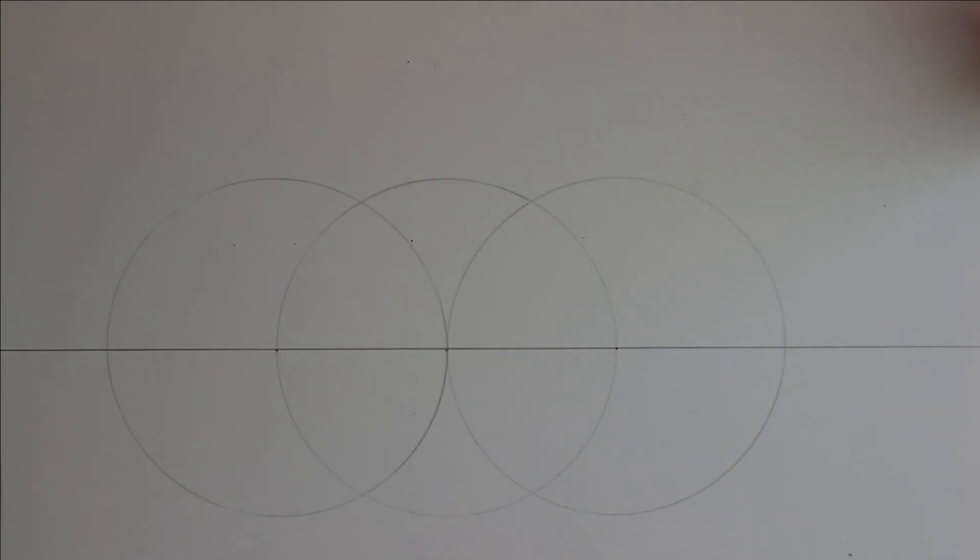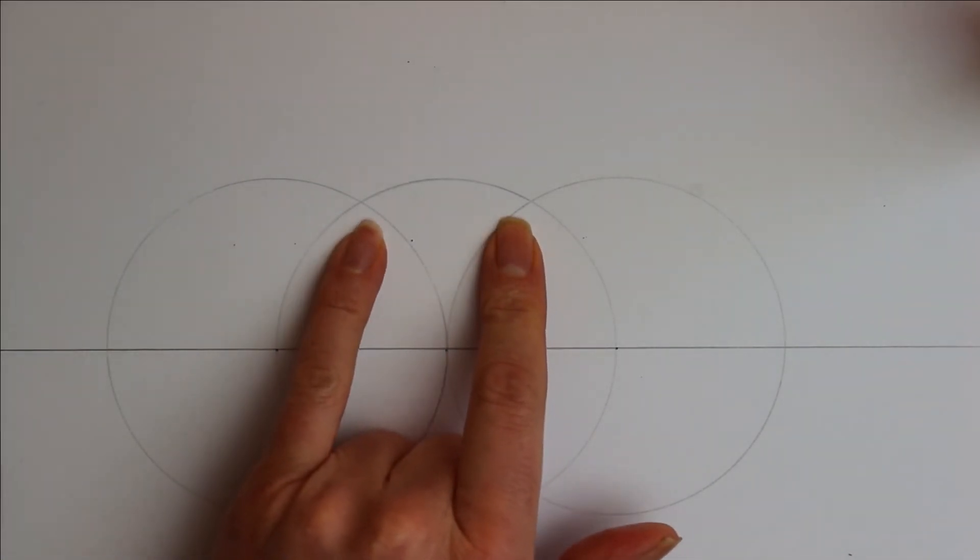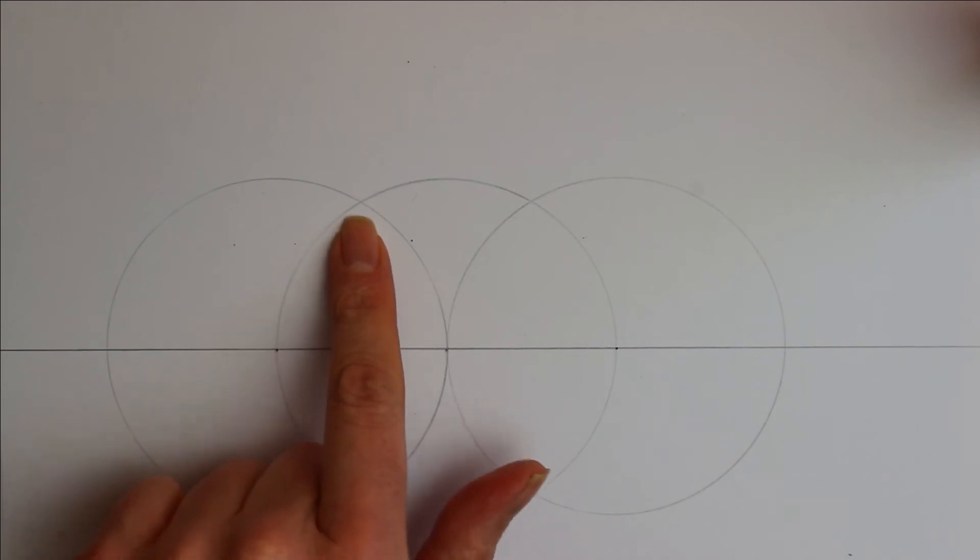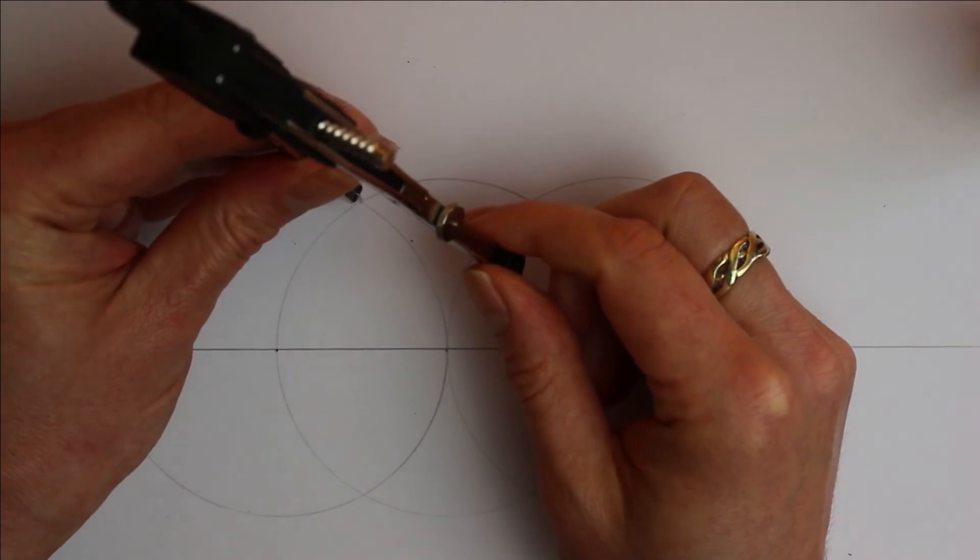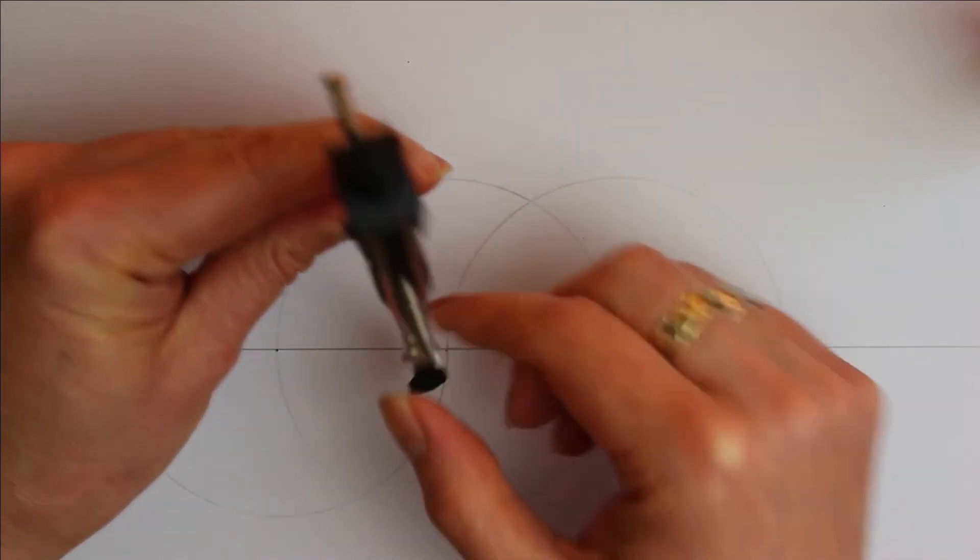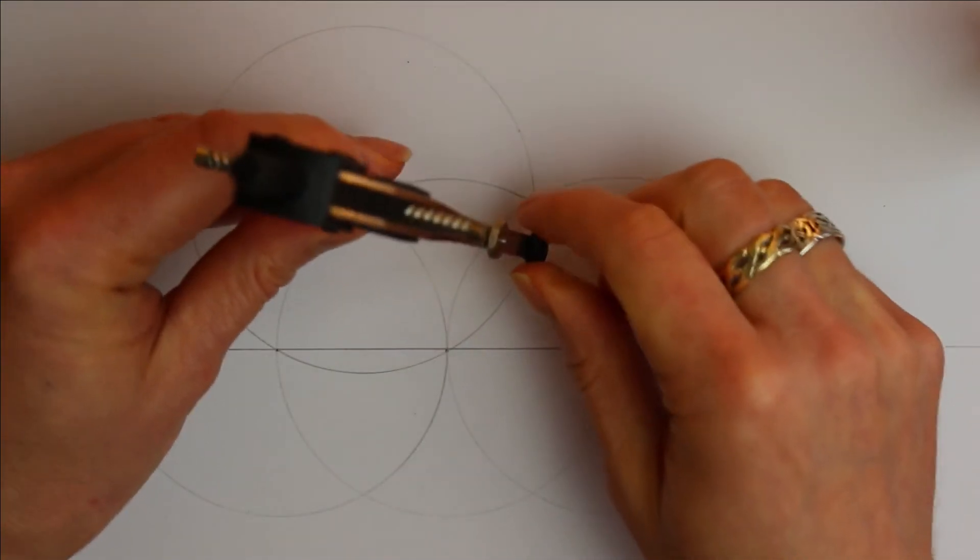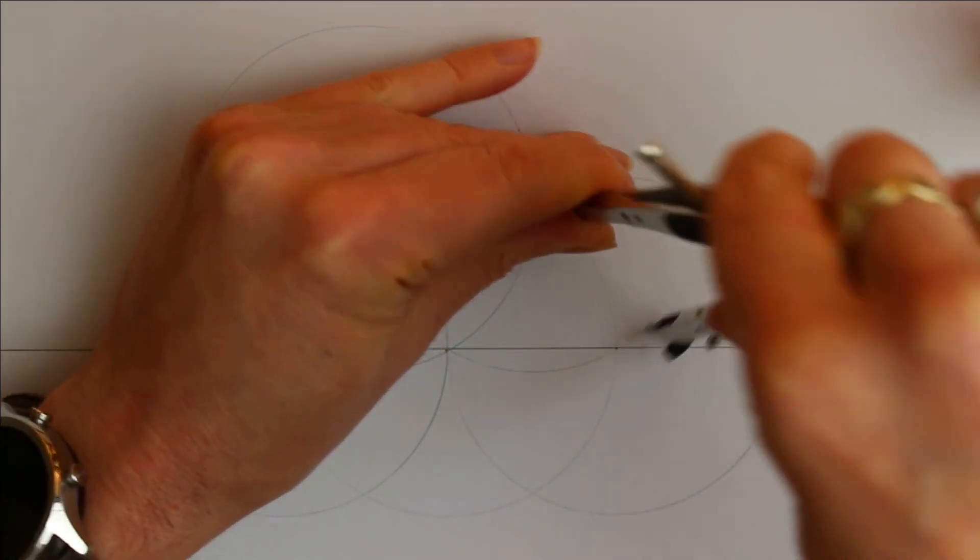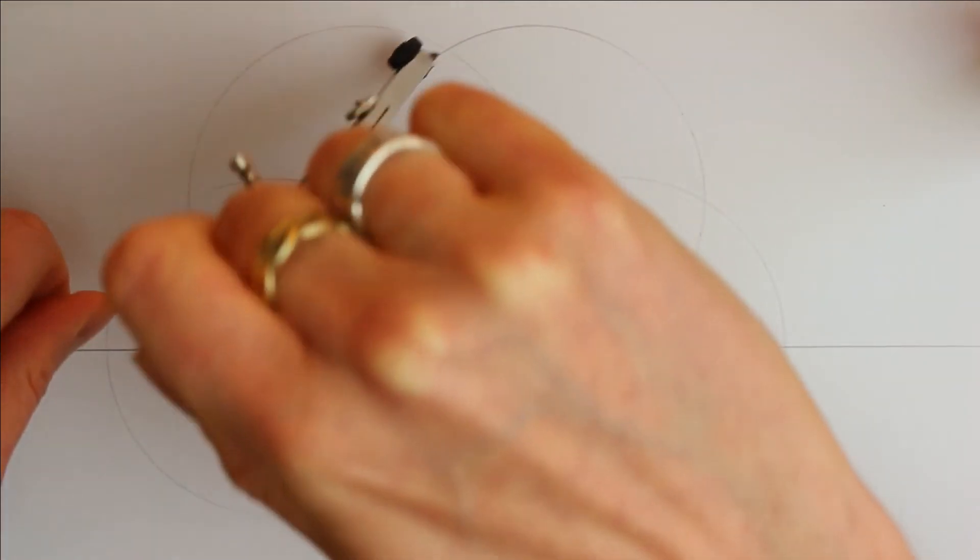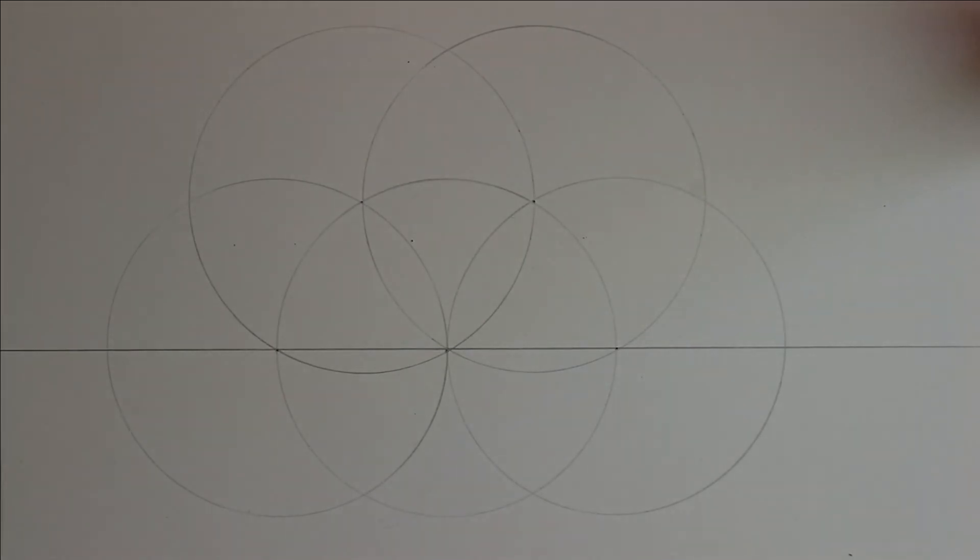Now the next stage is we need some more circles. So we're going to be drawing another two circles with the point of origin there and there. The whole point of this is just to be creating hexagons which then we can very easily divide into our equilateral triangles. So there it is, that's the final circle.